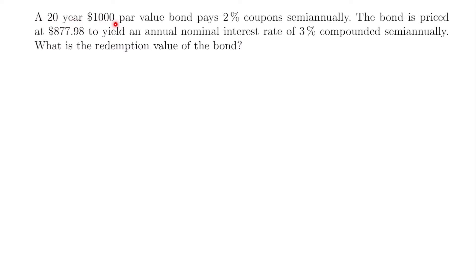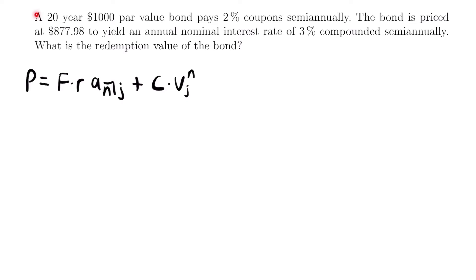For our next example, a 20-year $1,000 par value bond pays 2% coupon semi-annually. The bond is priced at $877.98 to yield an annual nominal interest rate of 3% compounded semi-annually. What is the redemption value of the bond? We start by writing down the price equation. We know we have a 20-year bond, so n equals 20 times 2 — which is 40 coupon periods. The face value F equals $1,000.